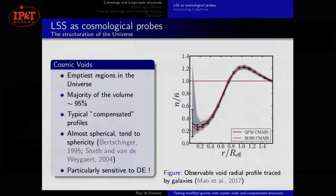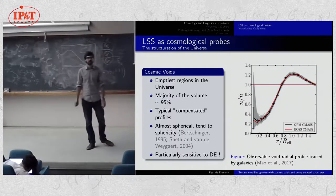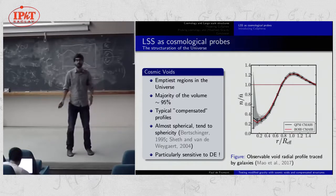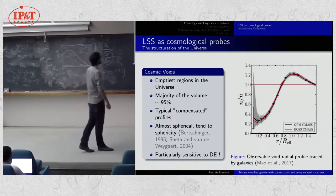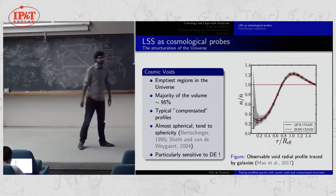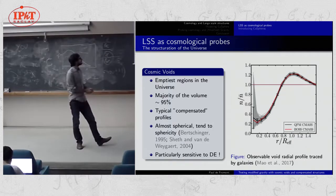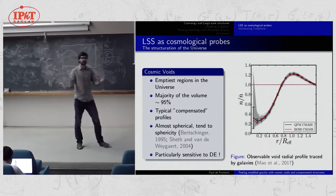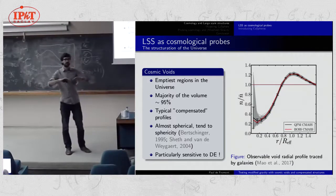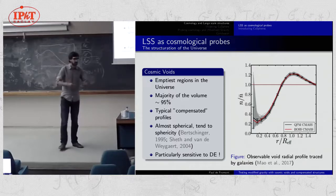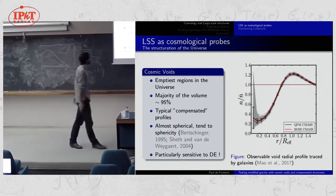So what are cosmic voids? By definition, cosmic voids are the emptiest regions in the universe, and they fill the very large majority of the volume today — almost 95%, depending on the definition. They have typical compensated profiles: a density profile measured in a galactic survey shows an under-dense central core surrounded by an over-dense compensation belt, where the over-density compensates the central under-density.